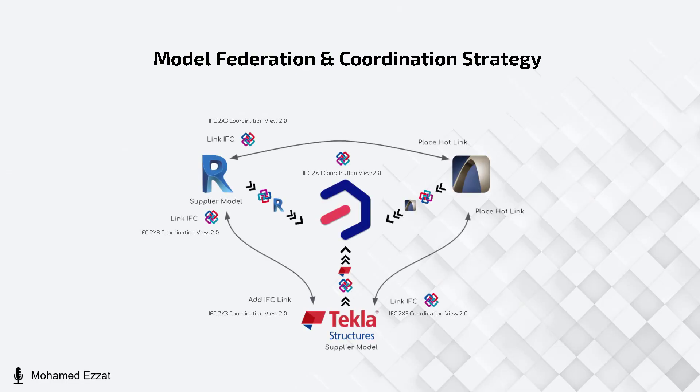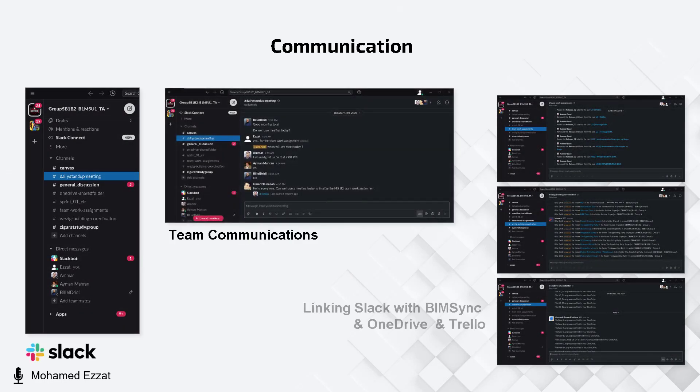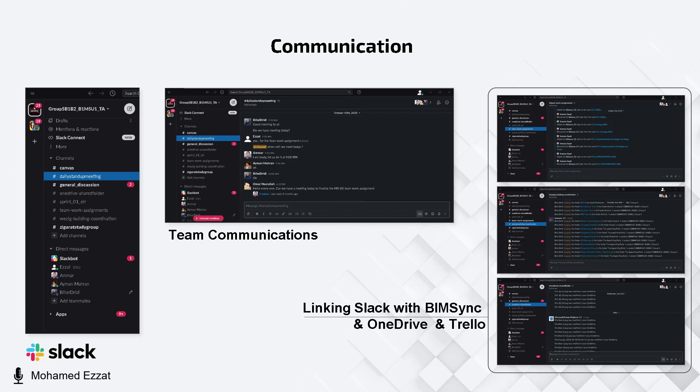Before starting with the communication, coordination, and collaboration section, we present our model federation and coordination strategy — the set of software used and how we managed to work in an open BIM approach. All models were exchanged in IFC format. We will talk about the most important part of any project, whether designed, constructed, or handed over. Since our first introductory meeting as Group 5 Heroes, we started with the simplest communication software, then progressed to proper tools. Slack was our official communication tool to share files and set meeting schedules with all team members.